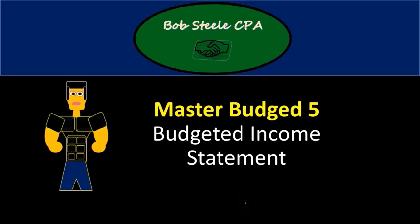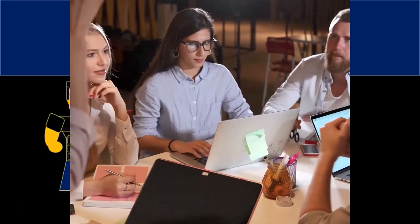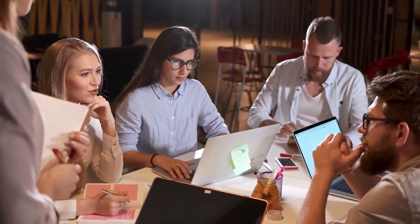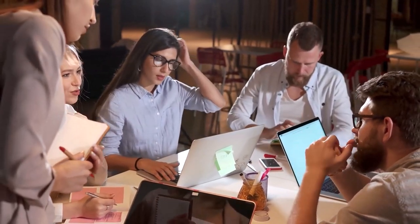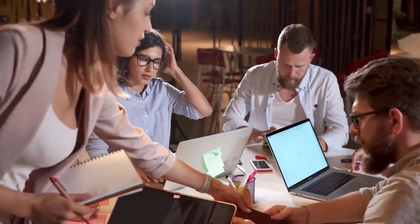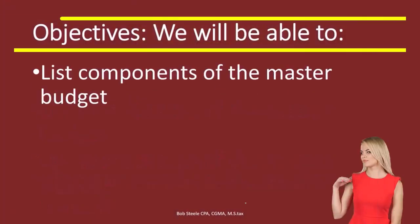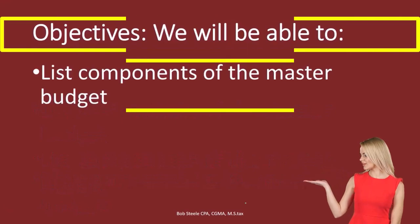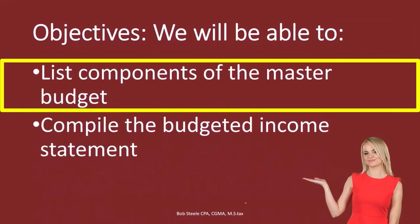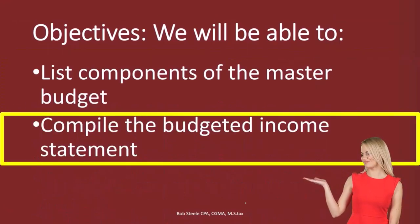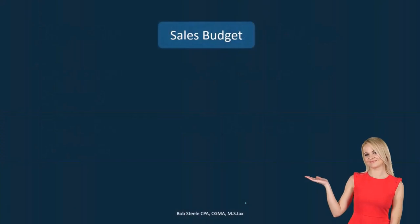Hello, in this lecture we're going to continue on with the master budget part five. We're going to continue with the income statement. If you haven't looked at the prior budgets, you'll want to do so, as we'll be using parts of them to create the budgeted income statement. After this, we will be able to list components of the master budget and compile the budgeted income statement.